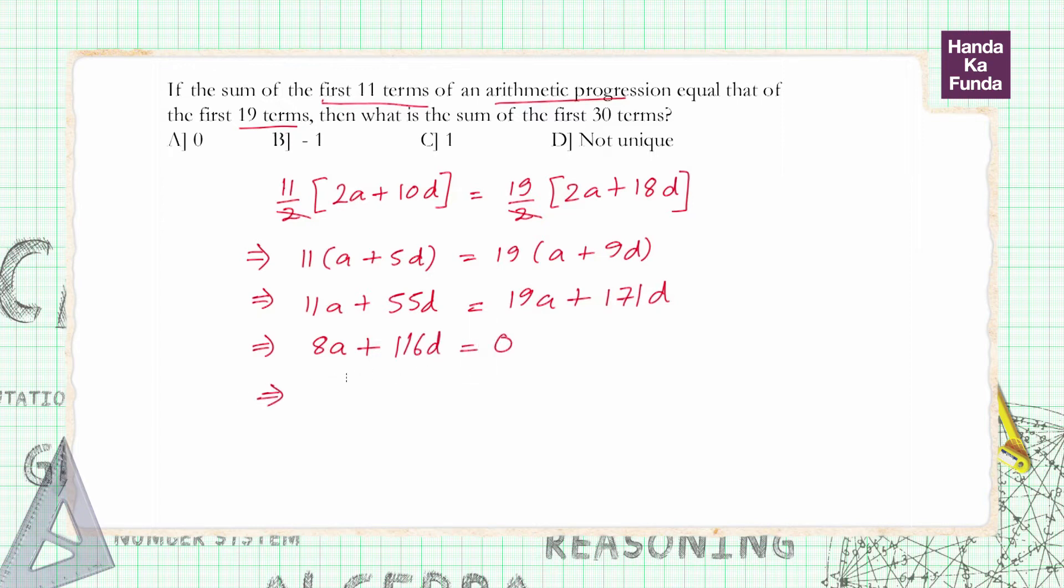Both these terms are divisible by 4. So this can be written as 2A plus 29D is equal to 0.